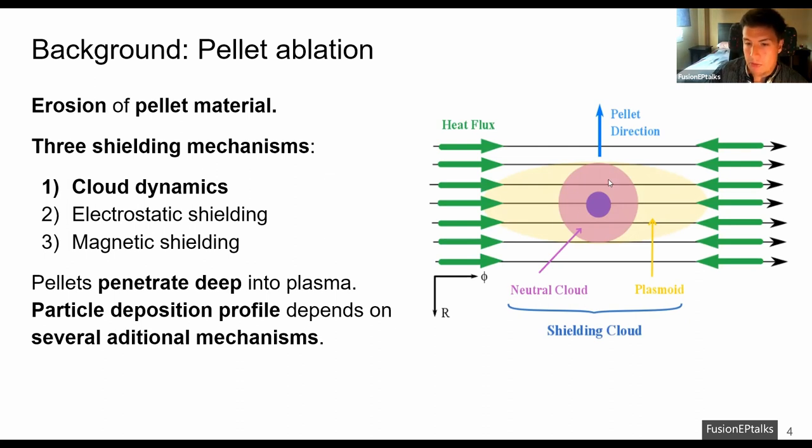This material then forms a neutral cloud around the pellet whose outer layers begin to ionize, the so-called plasmoid, and start expanding along the magnetic field lines. Both plasmoid and the neutral cloud constitute a shielding cloud that protects the pellet via these three mechanisms from further interactions with the plasma. In this way, the pellets are able to survive for longer times and therefore to penetrate deeper into the plasma.